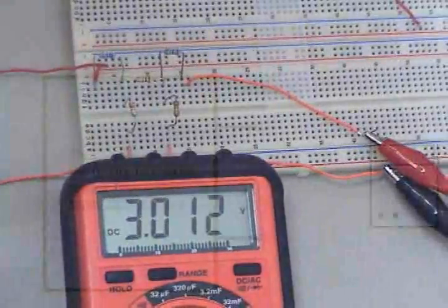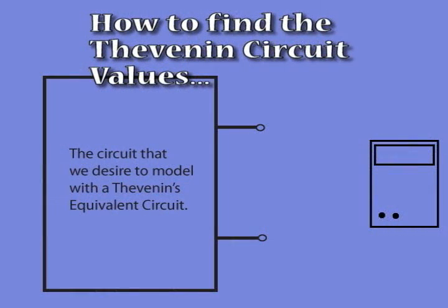The other wires lead to the multimeter which will help us to find the Thevenin circuit values.